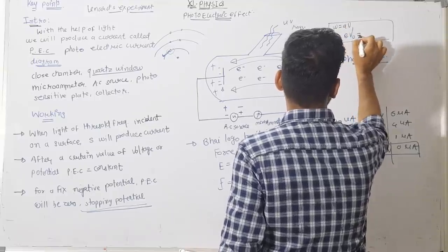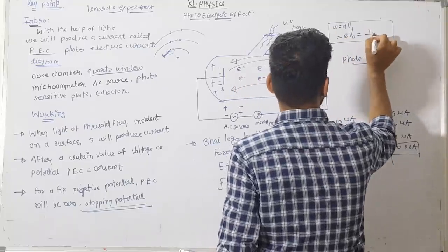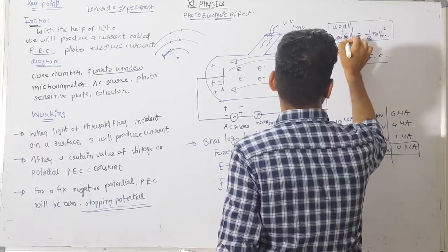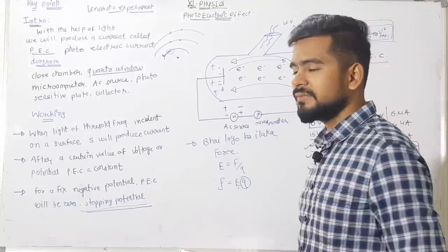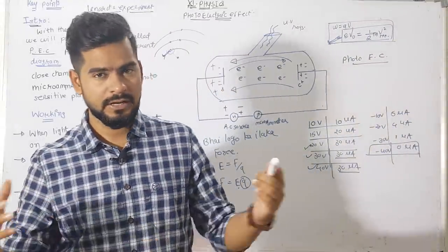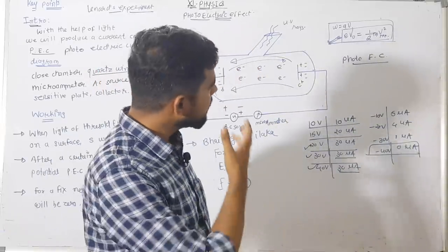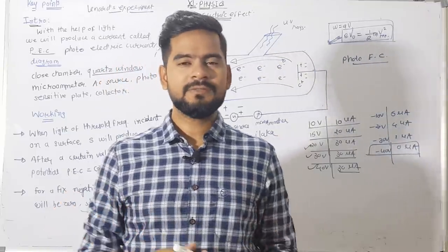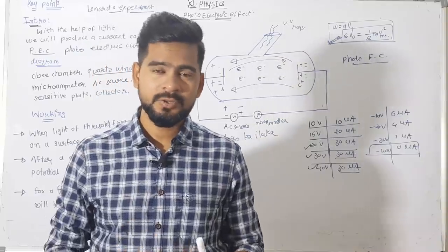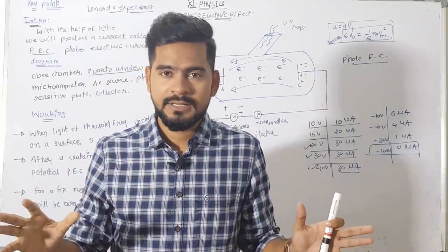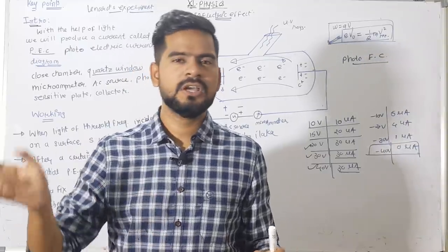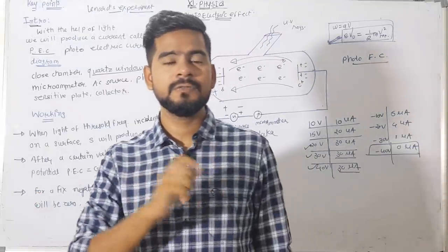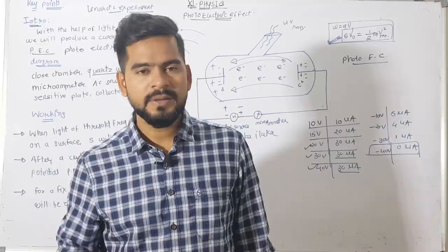The work done by stopping potential equals the kinetic energy of the photo electrons: eV₀ = ½mv²_max. This is a very important equation from which questions are always formed. In terms of electron volts, eV is equal to 1.6 × 10⁻¹⁹ joules. We will now discuss the graphical analysis of photoelectric current versus stopping potential.